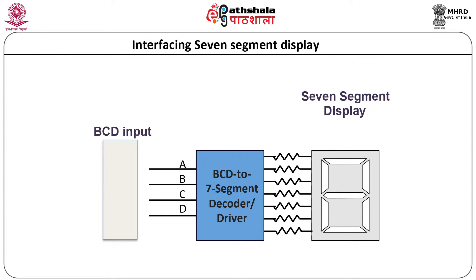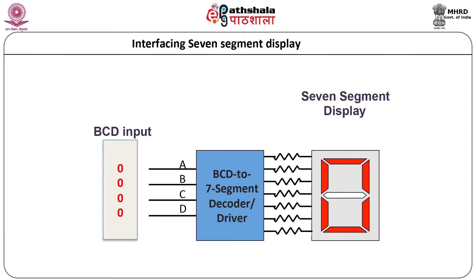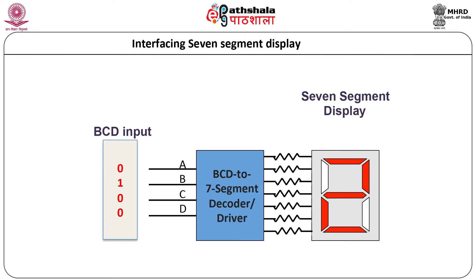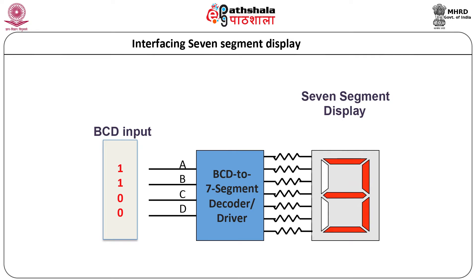Let us now study the actual interfacing of BCD to 7-segment decoder driver with the 7-segment display. Current limiting resistors are connected between them; the resistor value decides the brightness of the segment. When BCD input is 0000, the decoder generates outputs so that decimal number 0 is displayed. When BCD input is 0001, the decoder generates output so that decimal number 1 is displayed. When BCD input is 0010, the decoder generates output to display decimal number 2. When BCD input is 0011, the decoder generates output so that decimal number 3 is displayed. This is true for all binary codes.